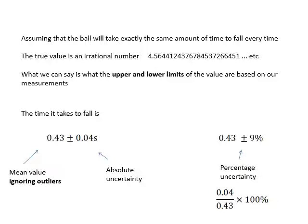When we came up with the mean value, we ignored outliers - ones which were clearly a mistake. It's all about probability. We state the mean value and we say what the uncertainty is, which is the difference between the mean value and the biggest difference. That's the absolute uncertainty. From that we can work out the percentage uncertainty, which in this case is nine percent. So 0.43 plus or minus nine percent.